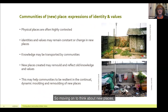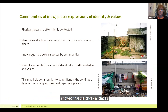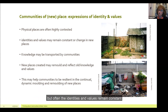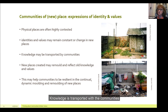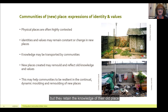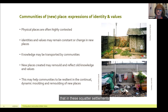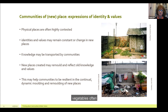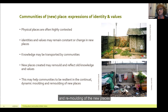Moving on to think about new places: research on migrant communities shows that the physical new places people go to are highly contested, but often the identities and values remain constant or change in the new places. Knowledge is transported with the communities as they migrate — they don't necessarily lose knowledge; they may gain new knowledge, but they retain the knowledge of their old place and often use it to mold the new place they're in. In these pictures of squatter settlements, you can see that people have molded their own small landscape spaces by planting flowers, plants, and vegetables. This may help communities to be resilient in the continual dynamic molding and re-molding of the new places where they arrive.